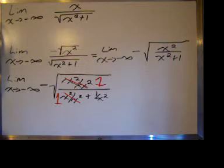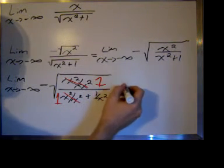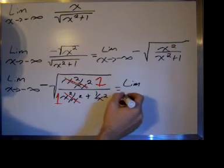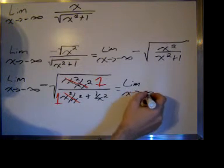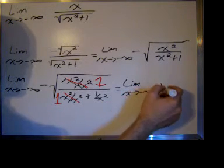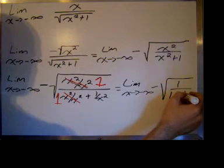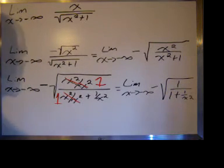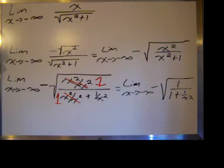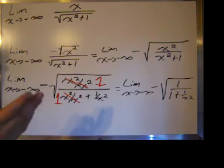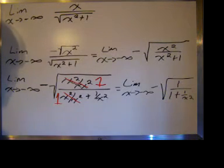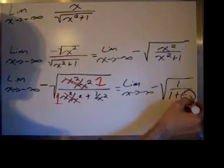So we can rewrite the limit as the limit as x goes to negative infinity of negative square root of one over one plus one over x squared. We can take the limit as one, as x goes to infinity, one goes to one, this one goes to one, one over x squared goes to,